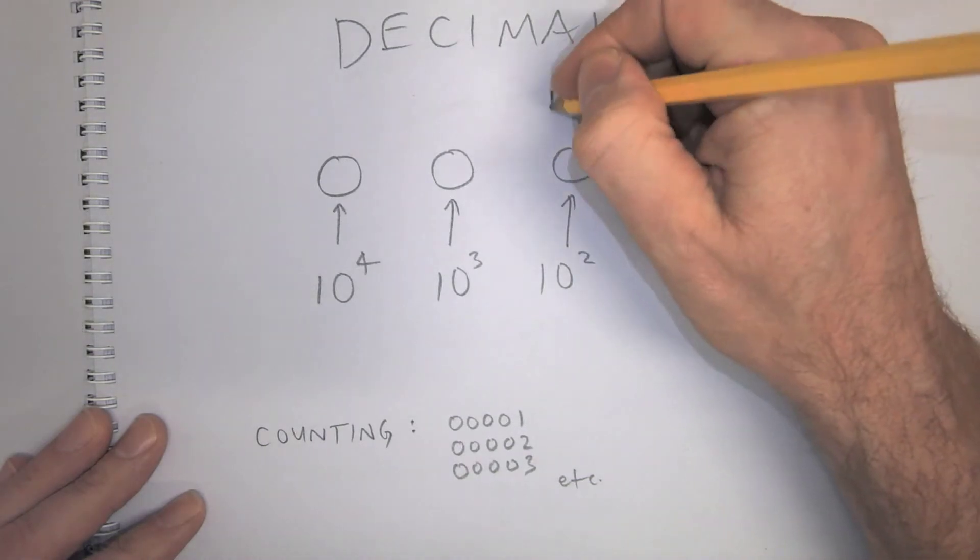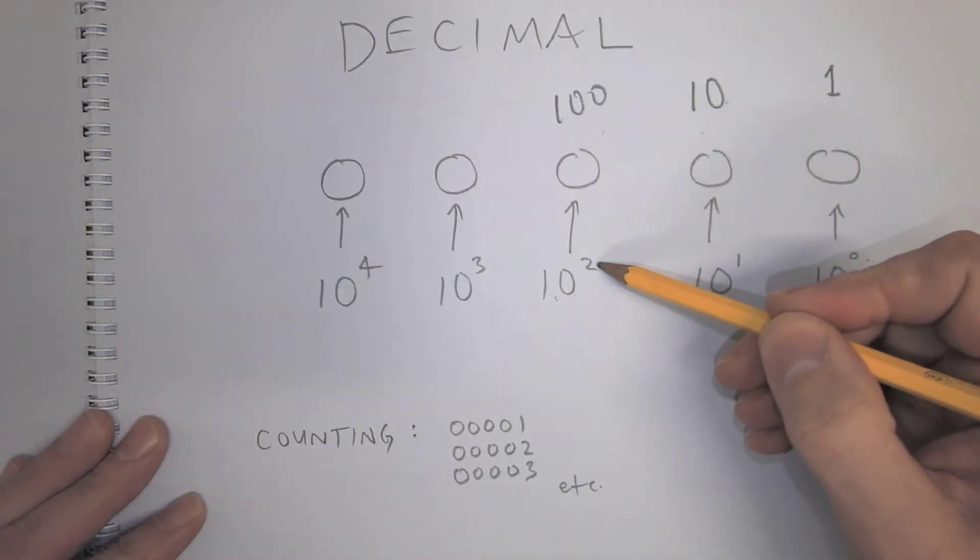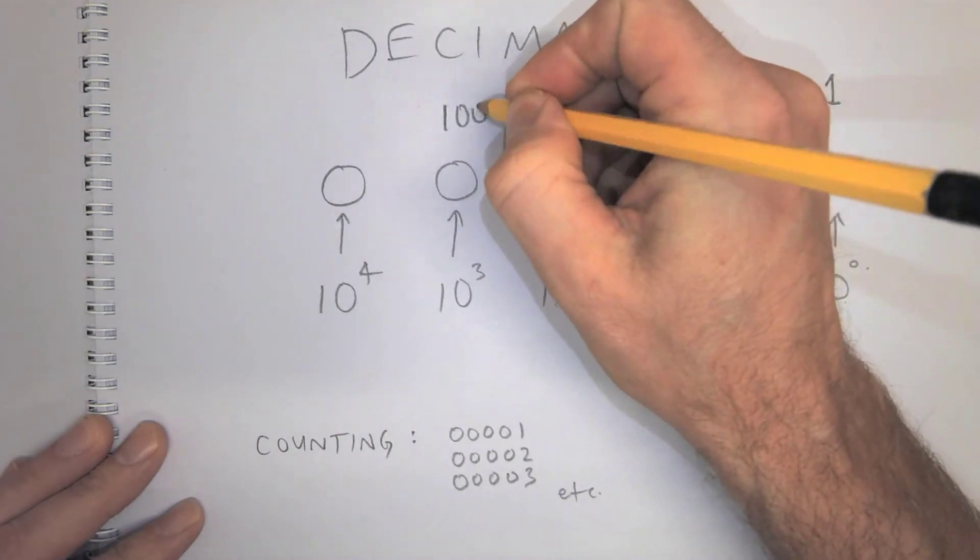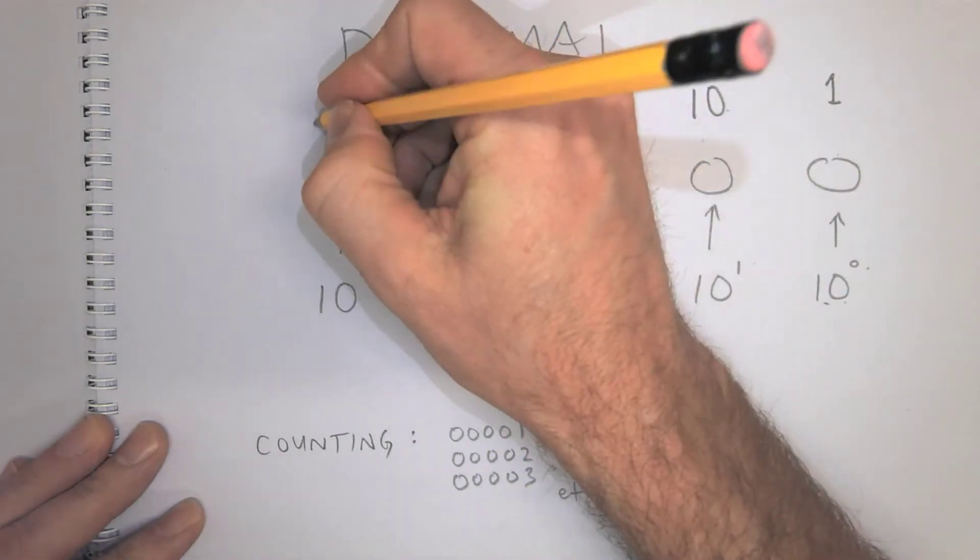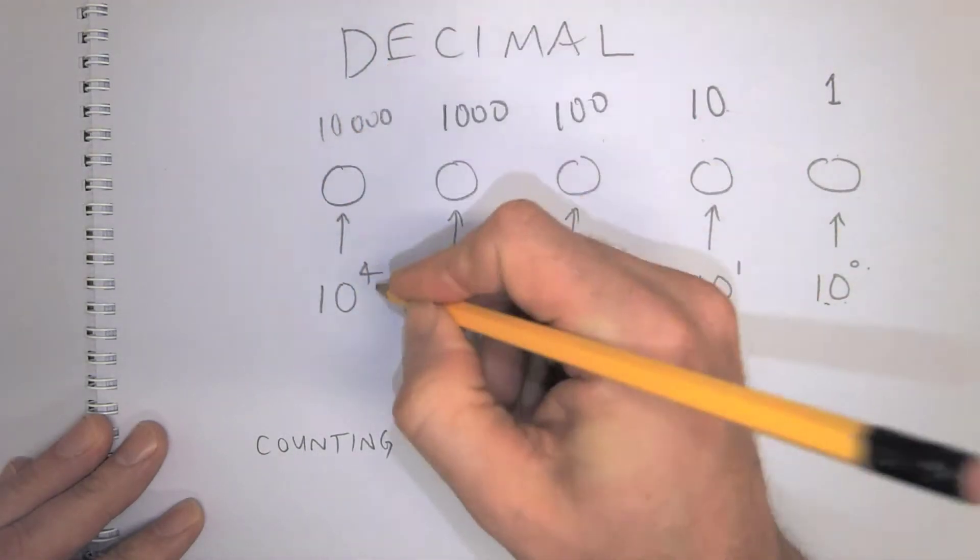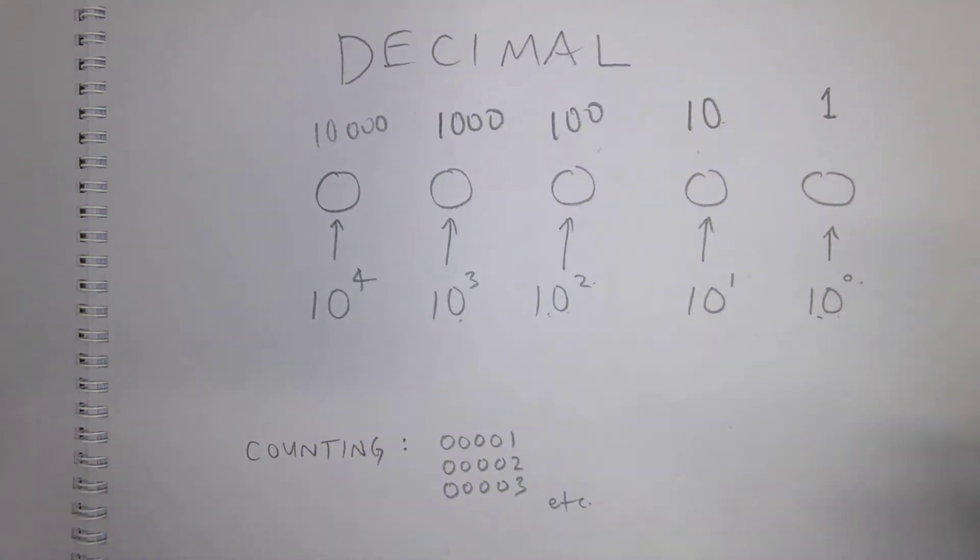And the next one, these are the 100s, that's 10 to the power of 2. This is 1,000, 10 to the power of 3, 10,000, 10 to the power of 4. So we know all this.